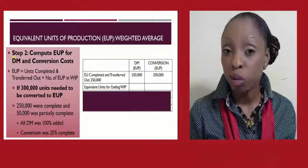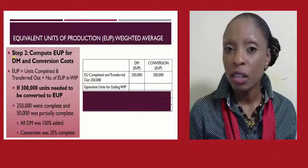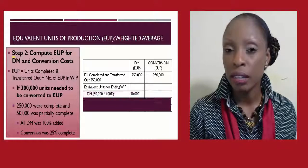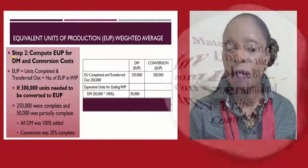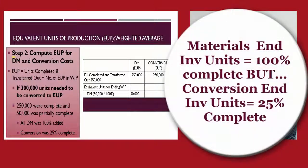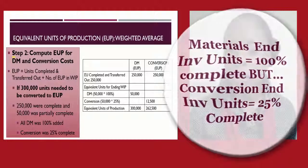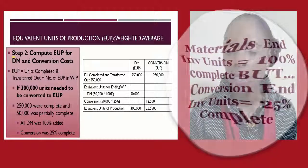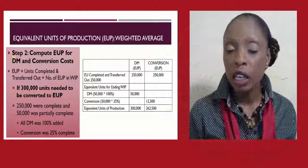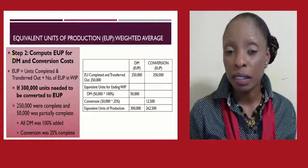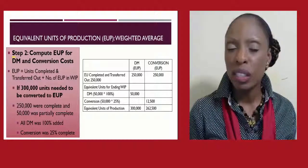For ending work-in-process, direct materials were 100% complete for the 50,000 units, so the equivalent units of production for direct materials is 50,000. For conversion costs, however, it was only 25% complete, so the equivalent units of production for conversion costs would be 12,500. Summing up, our total direct materials equivalent units of production is 300,000, but our total conversion costs equivalent units of production is 262,500.